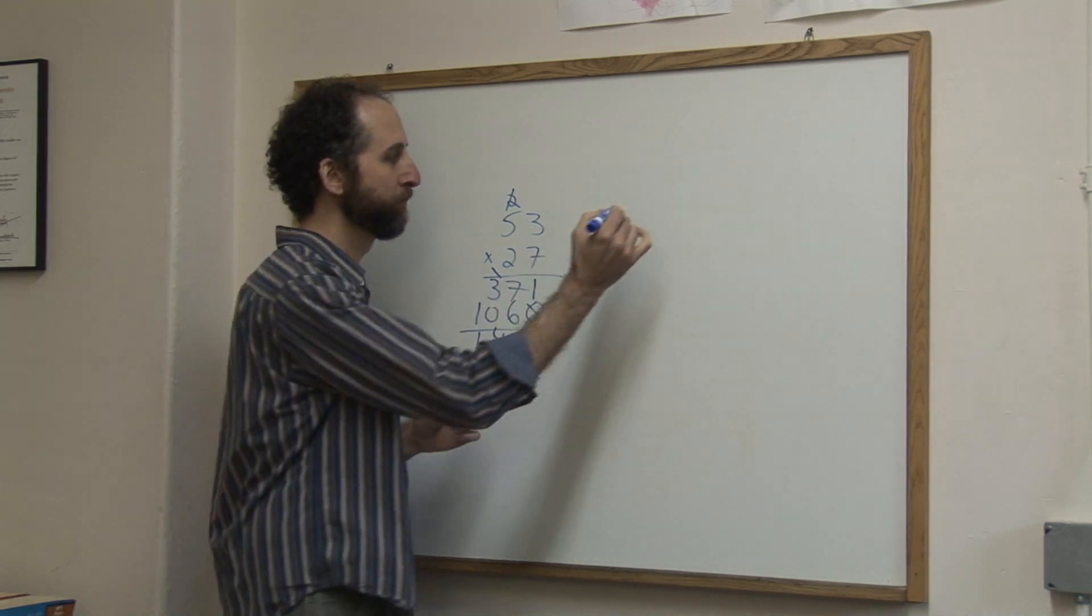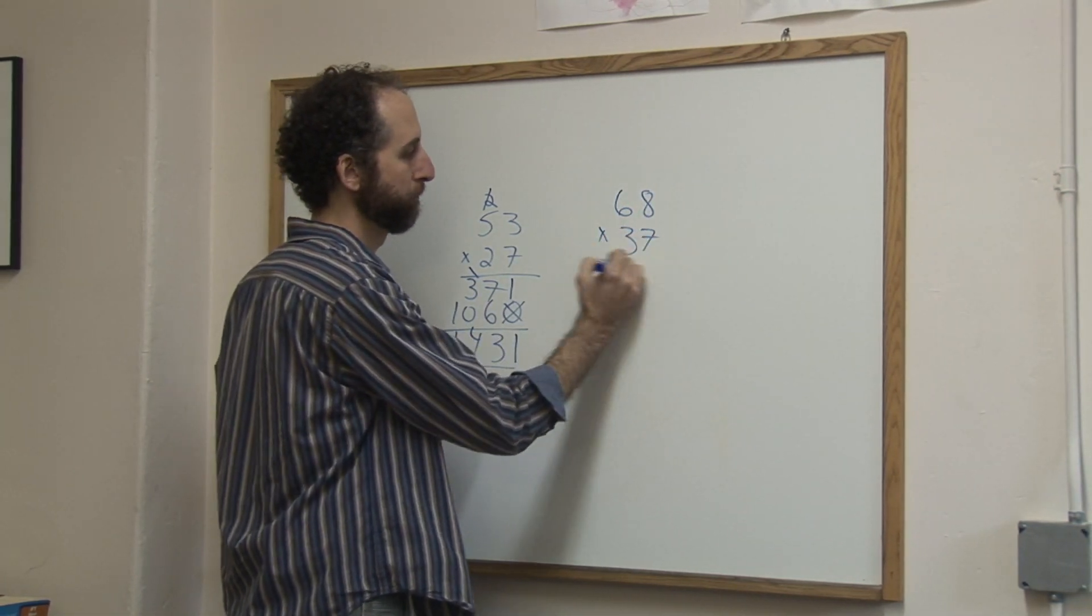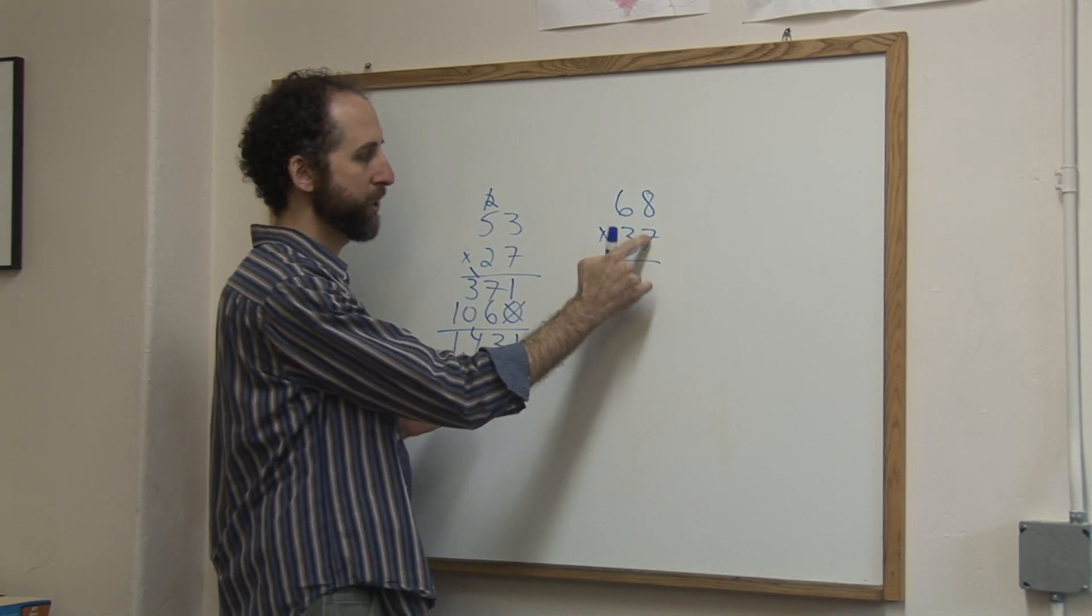Let's take a look at a second example. So let's say you've got 68 times 37. Again, we're going to multiply this digit by both of these.